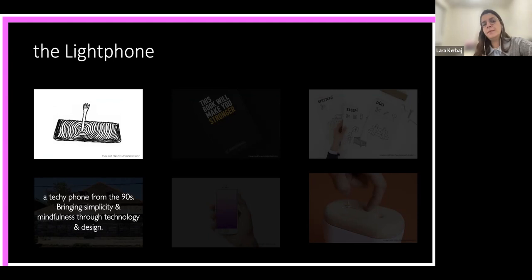The first one is called the Light Phone. It's a techie company, basically that created a phone from the nineties. The way they define it is bringing simplicity and mindfulness through technology and design. So it's a very simple phone that looks a bit like a Kindle that doesn't have bright colors, doesn't have colors really. You can only access contacts and an alarm and stuff like that. It's not technologically advanced in any sense. And their whole mission is to bring mindfulness into technology. If you think about it, this is basically the Nokia nineties phone. So they basically repurpose how this innovation started to make it purposeful in 2023 and link it to a cause.